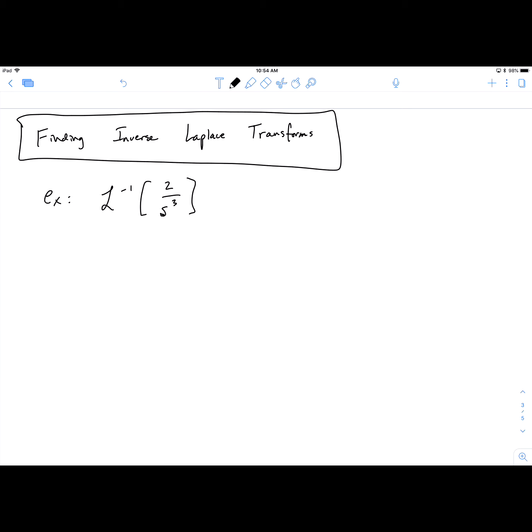So it's a handy thing to keep your table of transforms nearby just to compare to. Looking at that table, you should see that this one, the form that it most closely matches, is one that matches exactly. The Laplace transform of t to the n looks like n factorial over s to the n plus 1.